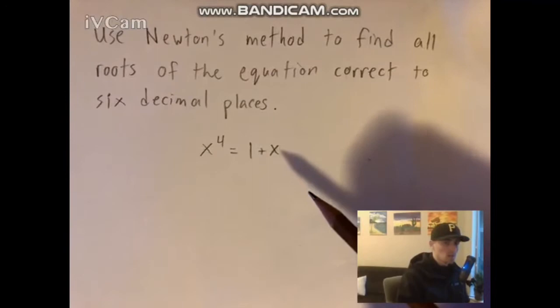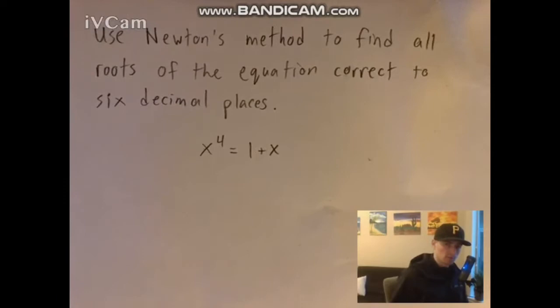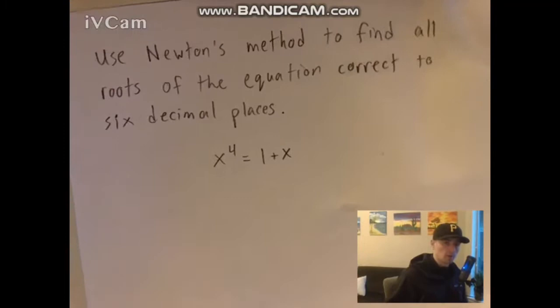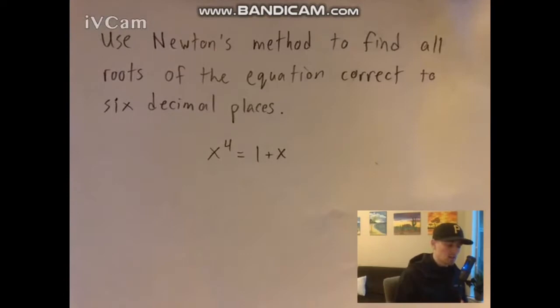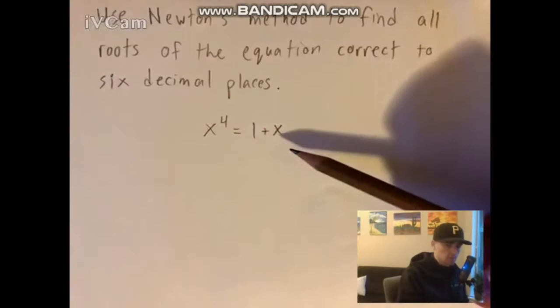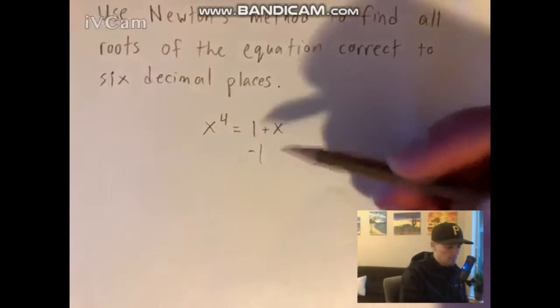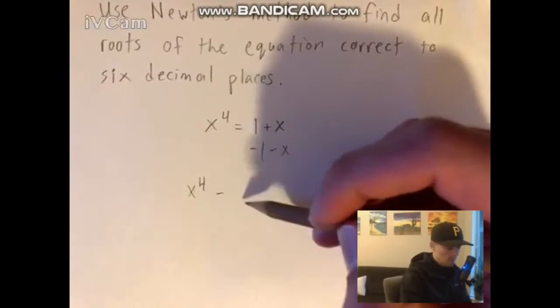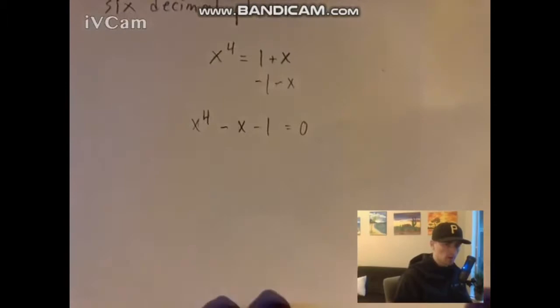Whenever you're using Newton's method, the point is to estimate roots using the derivative of some function. That function is determined when you have your equation set equal to zero. So the first thing we want to do is rework this equation so that we have all of our x's on one side and zero on the other. Subtracting the one and the x over to the left side gives us x to the fourth minus x minus one equals zero. Now we're going to use this left side as our function f(x) and apply Newton's method to that.